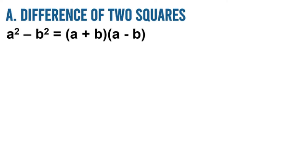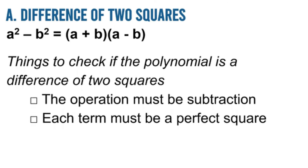So how will we know if the given polynomial is a difference of two squares? These are the things that we have to check. First, the operation must be subtraction — the minus sign must be in the middle. Second, each term must be a perfect square. To understand it clearly, let's have more examples.